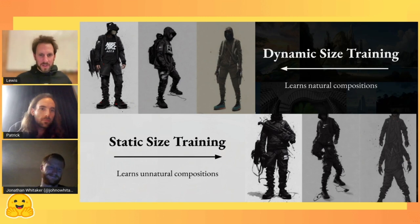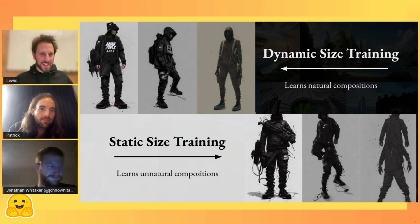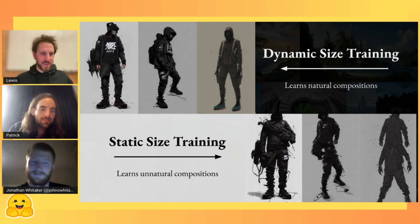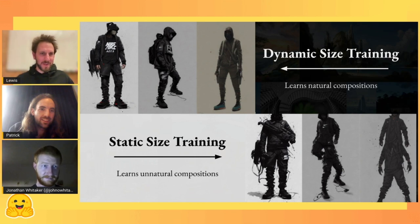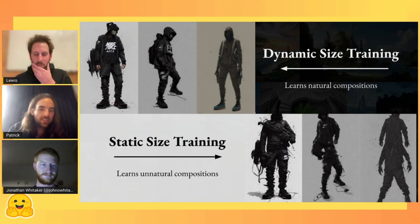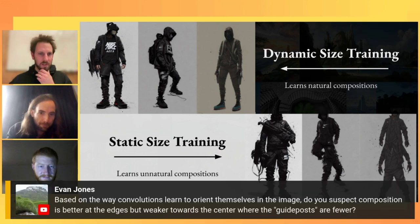Awesome, thank you so much Patrick. That was a really deep dive into ways to make diffusion models work, which is pretty nice to see because a lot of the time you just see the output — check out my fancy image on Twitter. It's actually quite revealing to see that there's a fair amount of careful intuition and engineering that's needed to get this out. We have a few questions from the audience. One from Evan Jones is: based on the way convolutions learn to orient themselves in the image, do you suspect composition is better at the edges but weaker towards the center where the guideposts are fewer?